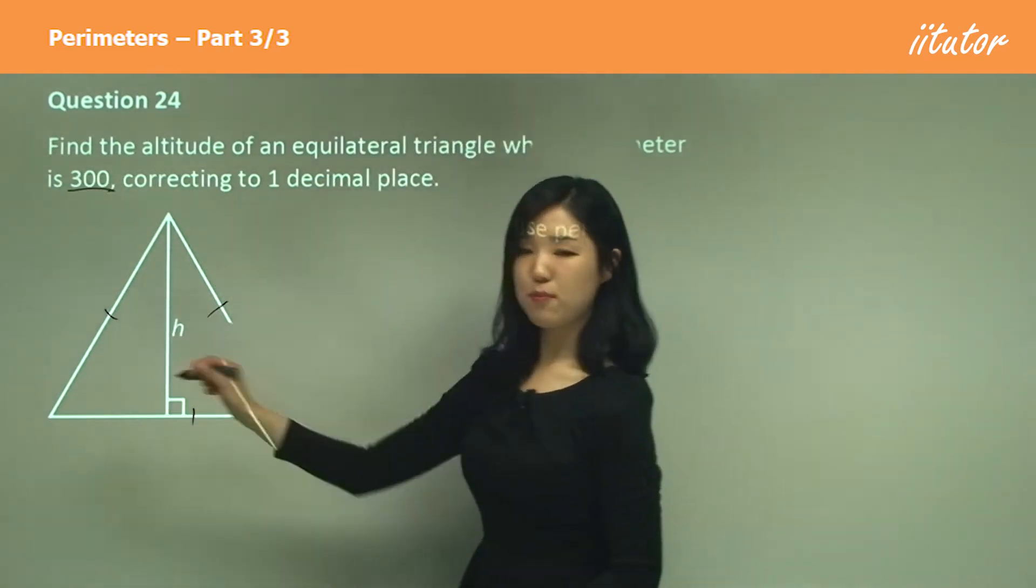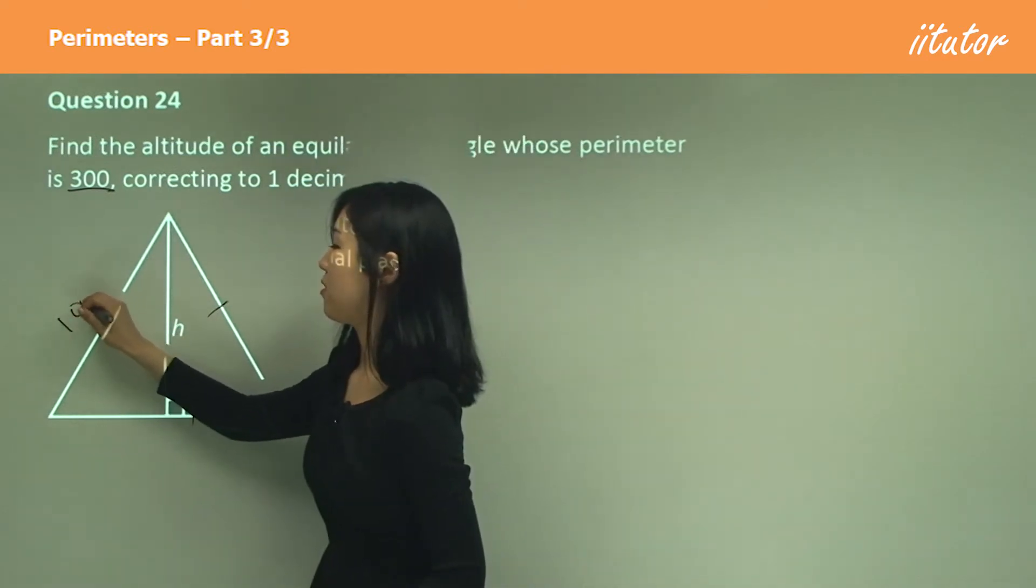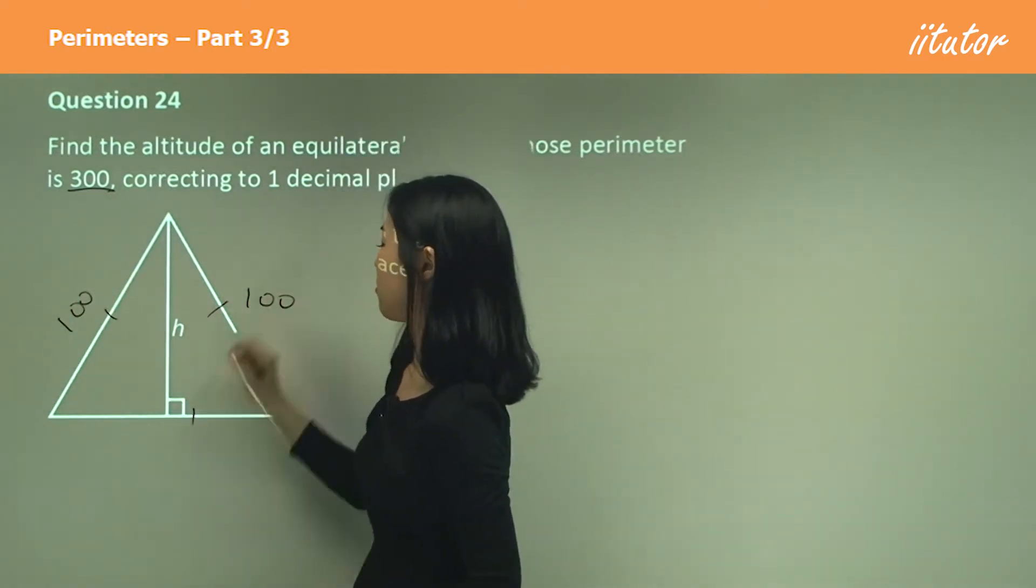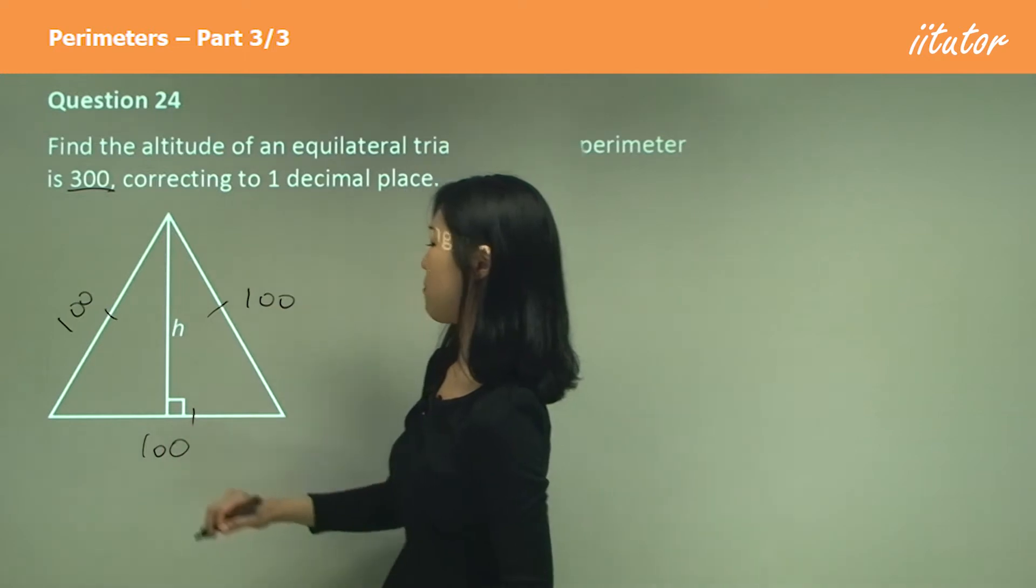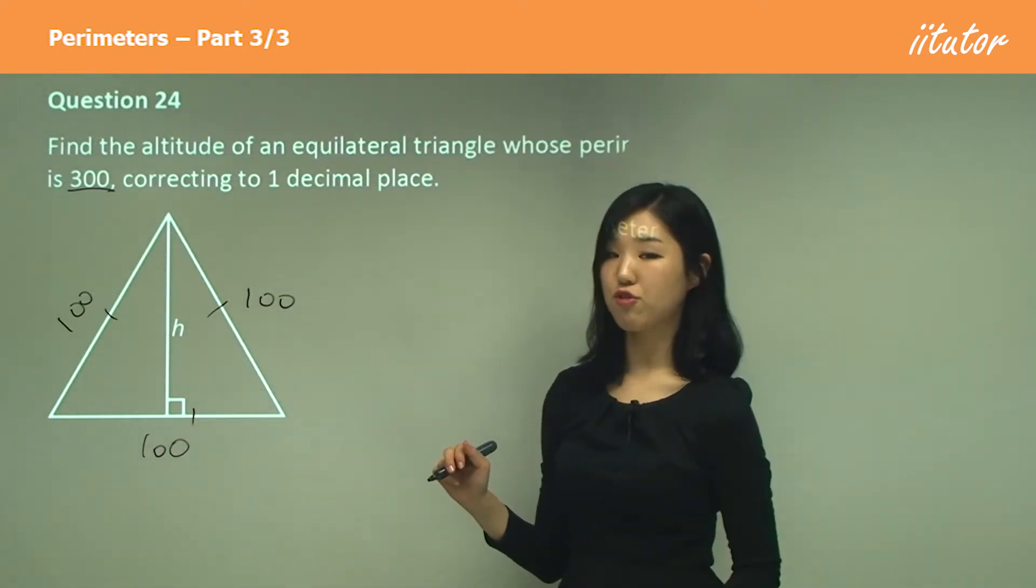So what should each of the sides be equal to? Must be 100, because they must be equal. 300 divided by 3 is 100, so each side must have a length of 100.